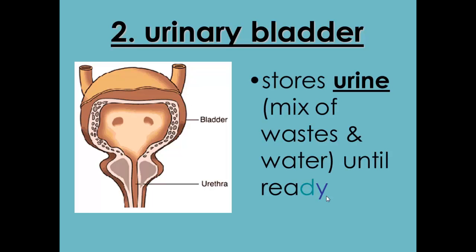The bladder stores waste — urine — until it's ready to leave the body. As you can see in this picture and in your notes, the bladder is a big, sac-like structure, and waste leaves through the urethra.